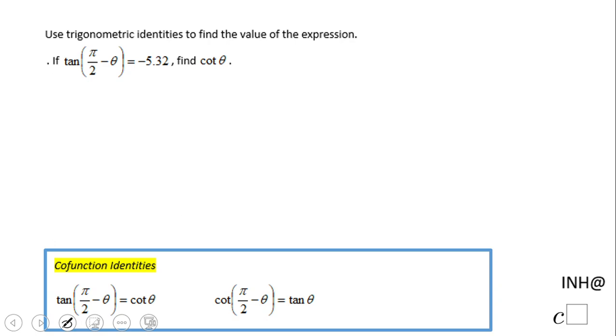Welcome or welcome back to Any Help I C Square. In this example we need to find cotangent of theta and we know the tangent of pi over 2 minus theta is negative 5.32. How am I going to do that?